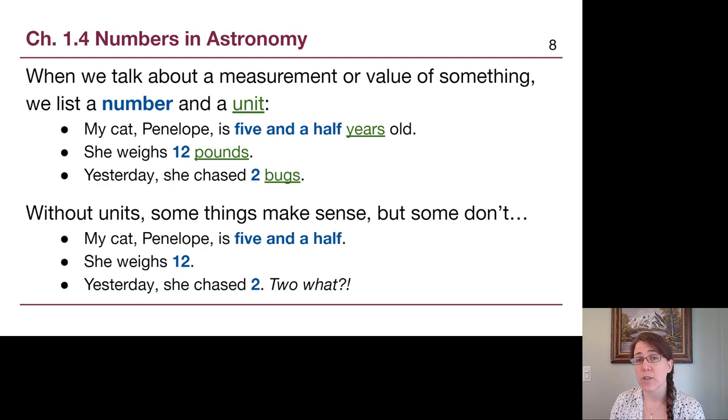Now, without units, sometimes things still make sense. If I talk to you about my cat Penelope, and I say that she's five and a half, that is actually how we talk about ages in everyday language, right? My niece is 12. I don't have to say 12 years old for you to know what I'm talking about. But it is worth recognizing that that first statement, my cat Penelope is five and a half, that still has some ambiguity. If you knew that I had some full grown cats at home and some kittens at home, that could be years, or it could be months, and we wouldn't know if I didn't say the unit specifically.